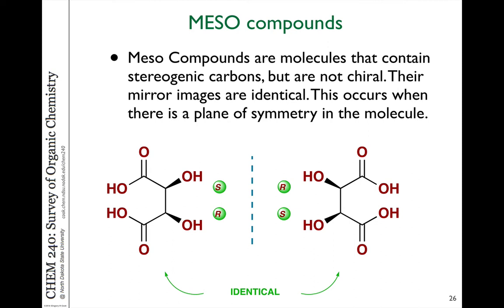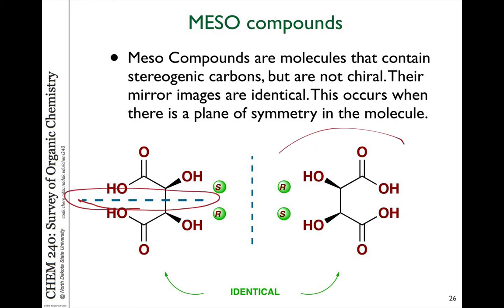This happens when you have molecules which are symmetric. For example, you could number the molecule the same from either side of the carbon chain — it has symmetric groups on all sides. You can see that there is a mirror plane right down the middle of the molecule. That mirror plane means the molecule has symmetry and its mirror image is identical.